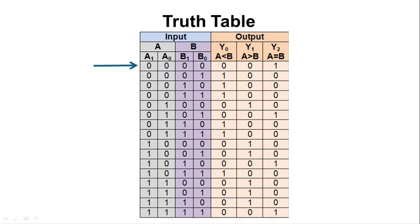In the first row, we have a1a0 as 00 and b1b0 as 00. In decimal, 00 is 0, so both A and B are equal. In this case, y2 will be high and the remaining two outputs y0 and y1 will be 0.